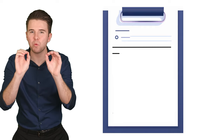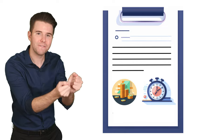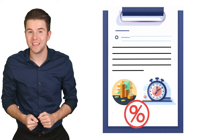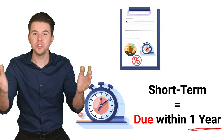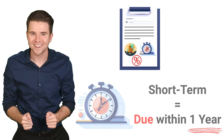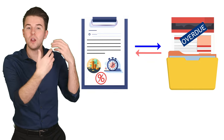A note payable is a written promise to pay an amount of money on a specific date and usually with interest. A short-term notes payable means that the money is due within one year. A note payable can also be exchanged for an overdue accounts payable. A note payable is preferred by the party owed money because a note can earn interest and is a written promise, which can be beneficial to them in a legal dispute.